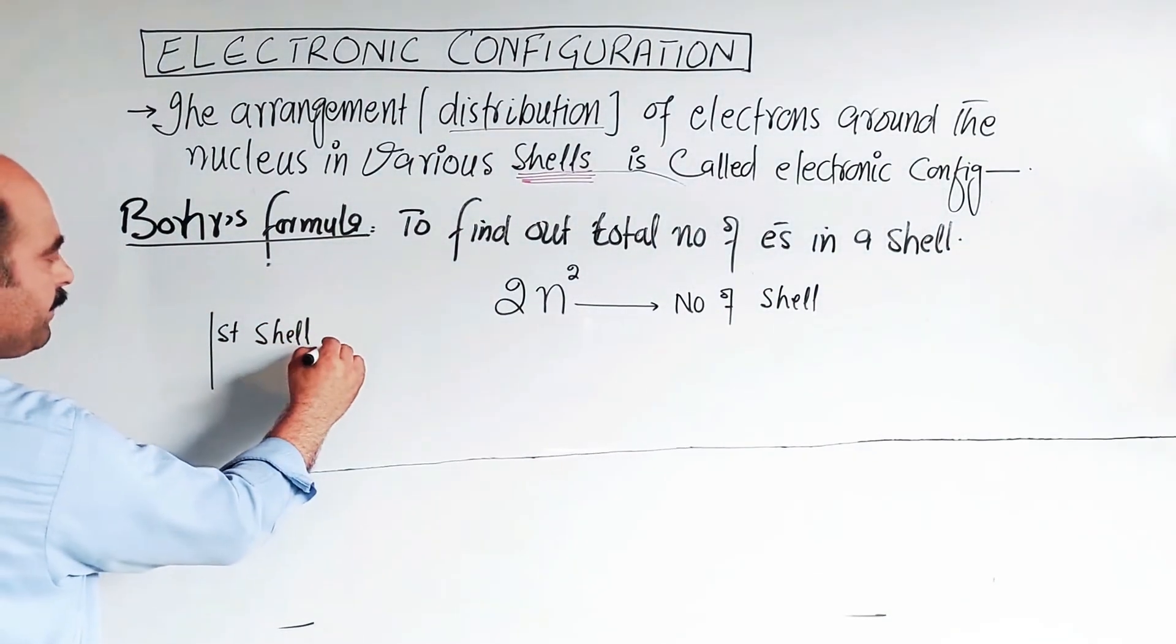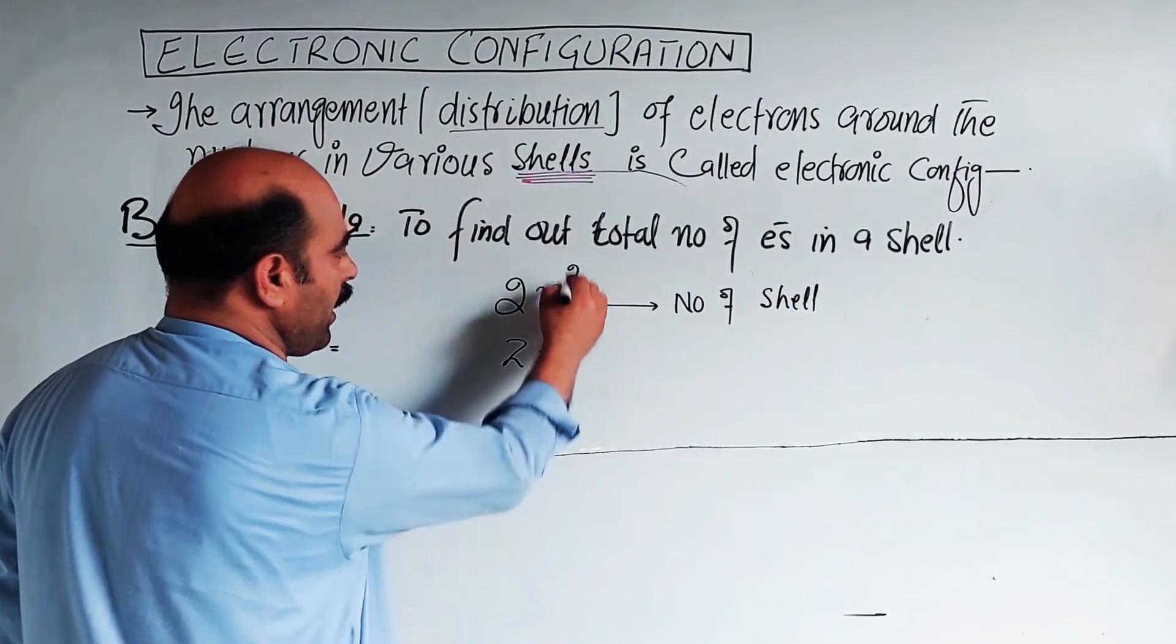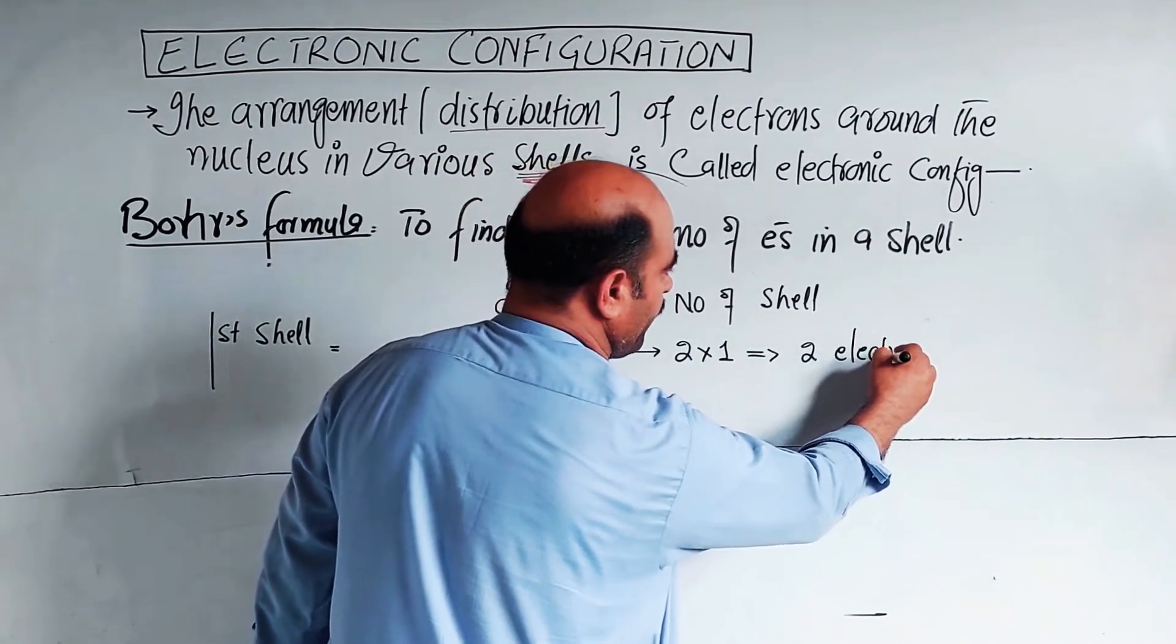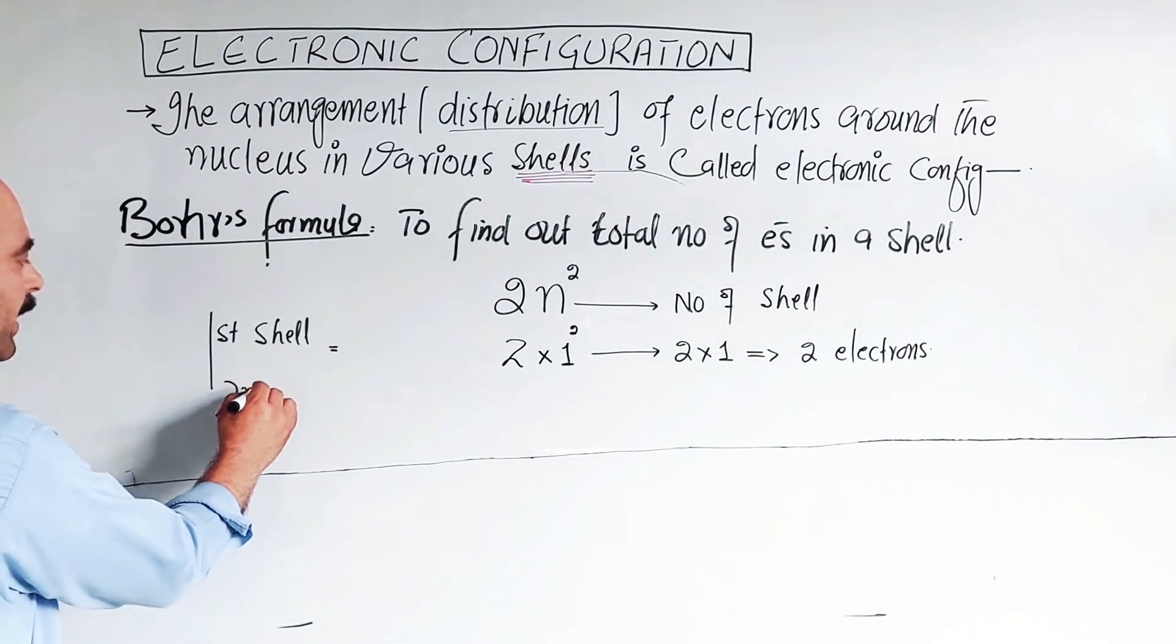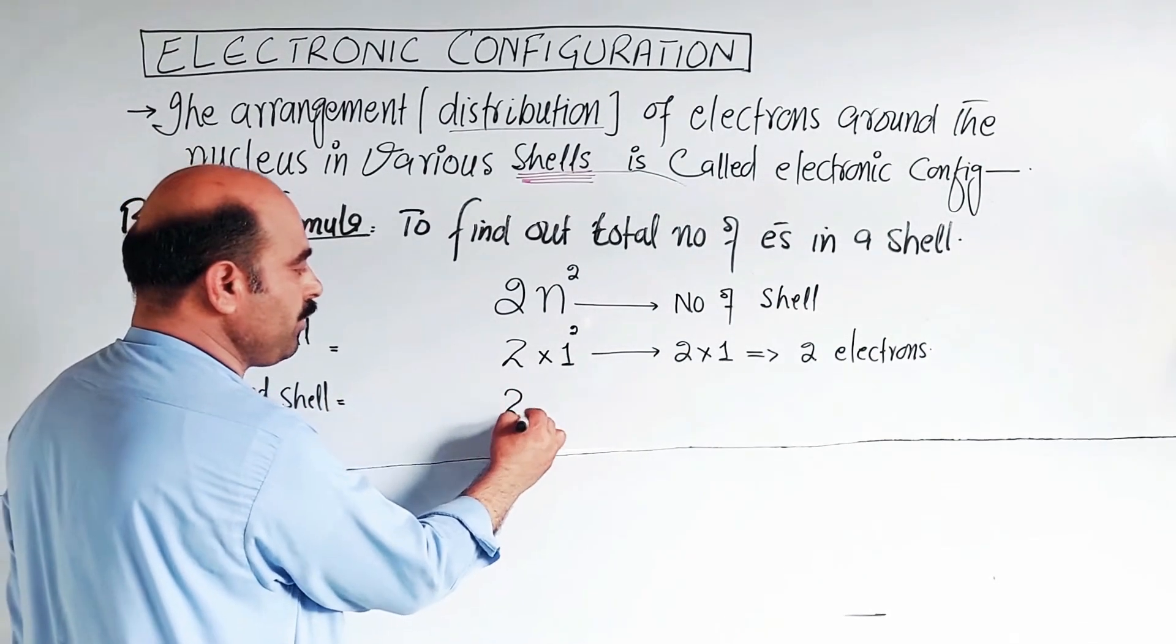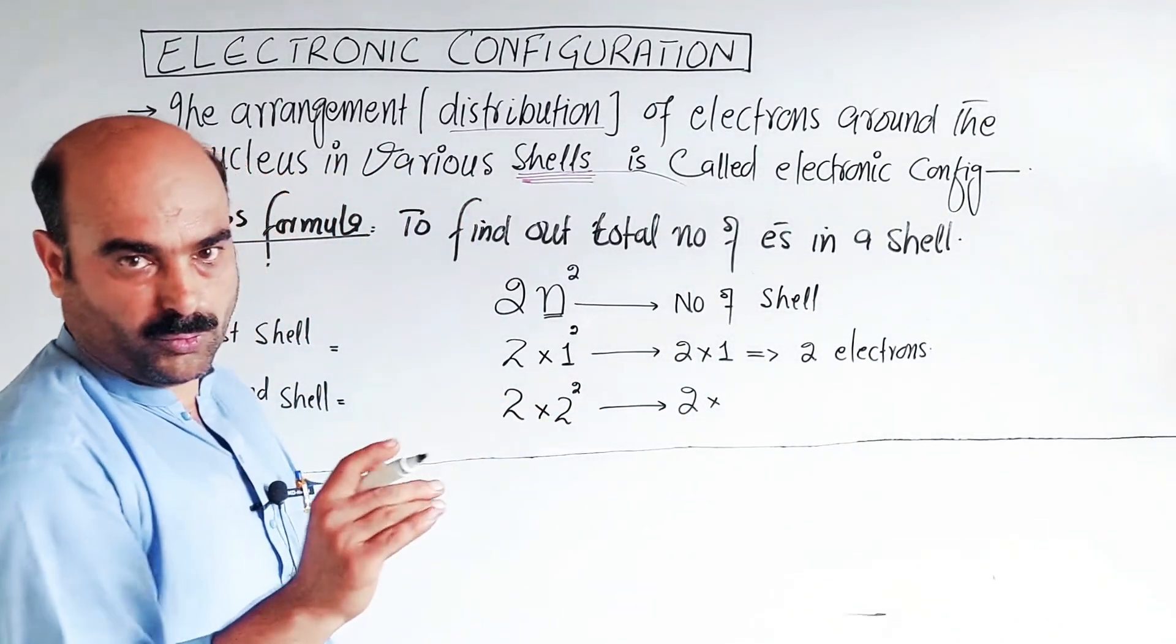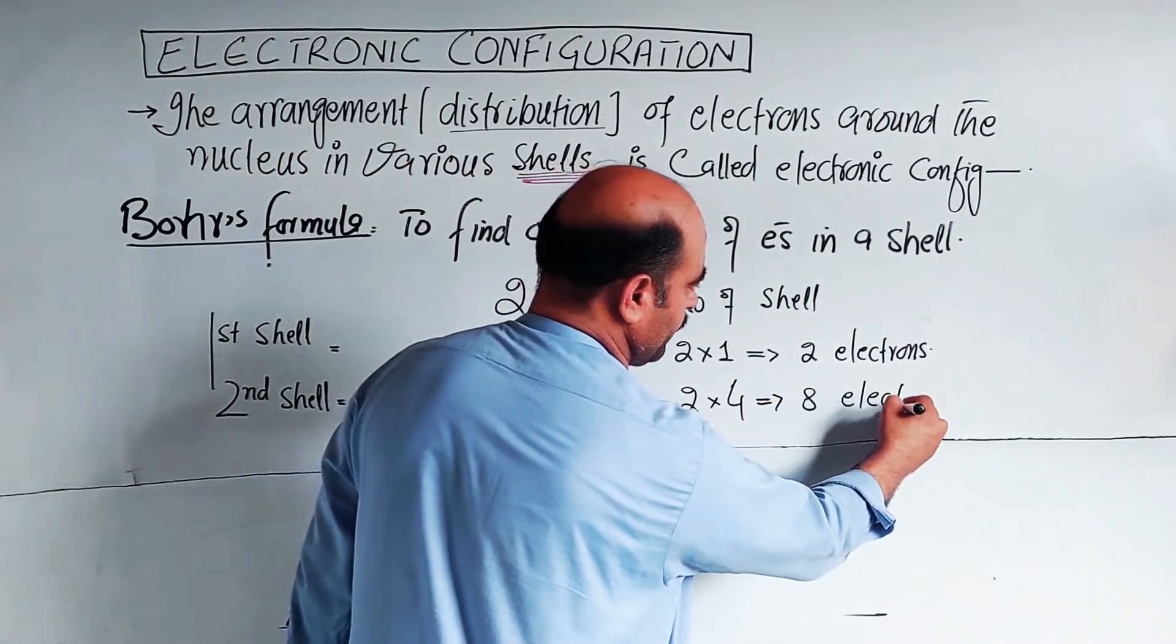For the first shell, electrons equal 2n² where n is 1. So 2 multiplied by 1 squared equals 2 multiplied by 1 equals 2 electrons. Clear?